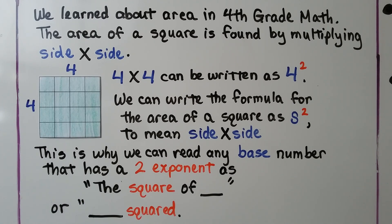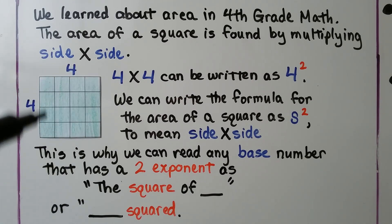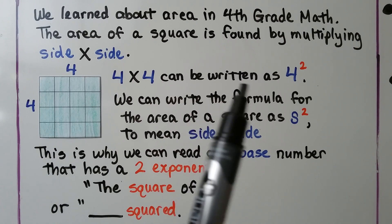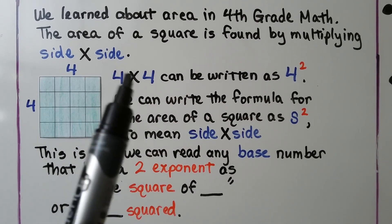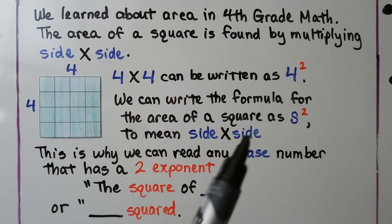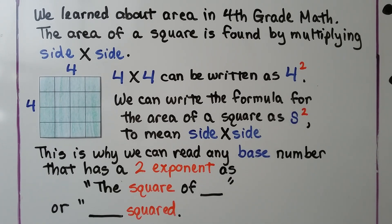We learned about area in fourth grade math. The area of a square is found by multiplying a side times a side. So with 4 on each side, we can find the area by multiplying 4 times 4, and we can write it as 4 to the 2nd power, because we have 2 factors of 4. We can write the formula for the area of a square as side squared, or s to the 2nd power. This is why we can read any base number with a 2 exponent as the square of that number, or that number squared — like 4 squared or 4 to the 2nd power.